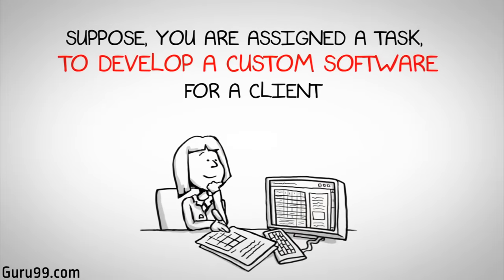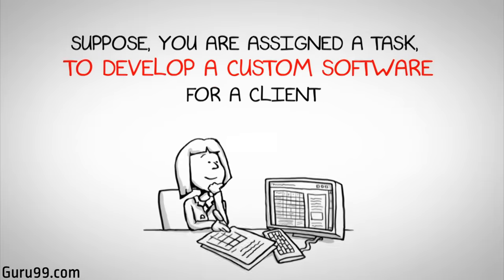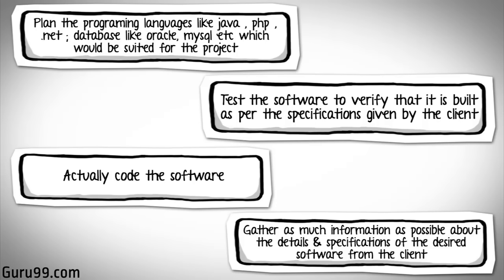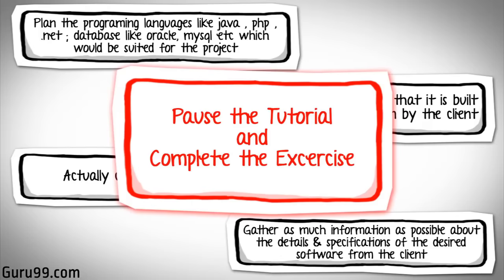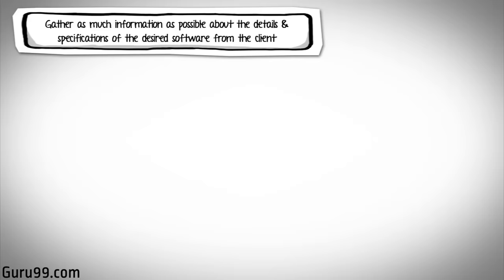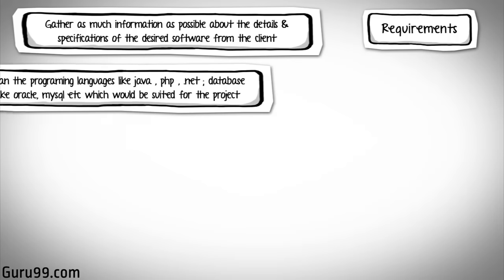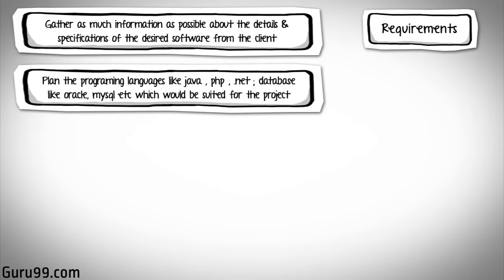Suppose you are assigned a task to develop a custom software for a client. Each block represents a step required to develop the software. The correct sequence would be: gather as much information as possible about the details and specifications of the desired software from the client — this is the requirements gathering stage. Plan the programming language like Java, PHP, .NET, and database like Oracle, MySQL, which will best suit the project. Also determine high-level functions in architecture. This is the design stage.